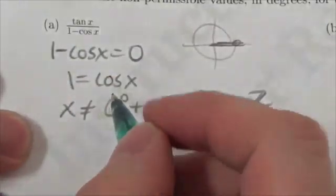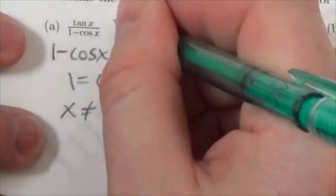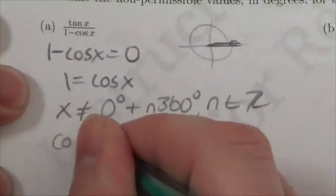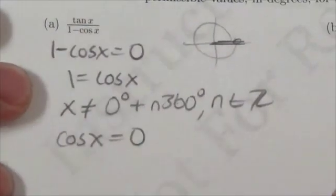Tangent is sine over cosine, so it's got a cosine in its own denominator. So what that means is, I also cannot allow cosine to go to zero.